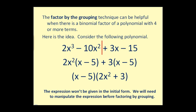The factor by grouping technique can be useful when there is a binomial factor of a polynomial with four or more terms. Let's consider a polynomial with four terms and divide it in half. We take the first two terms and factor out the greatest common factor of two x squared, which leaves us with x minus five.